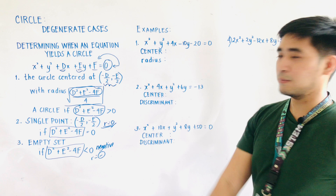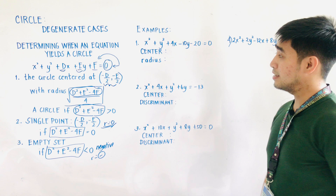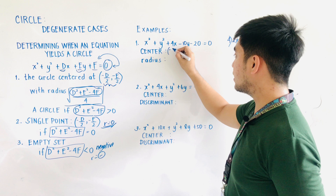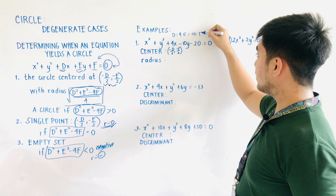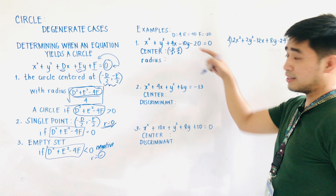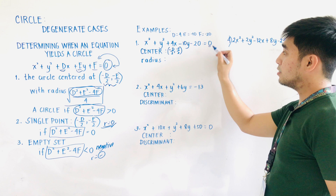Let us now solve examples. We have x squared plus y squared plus 4x minus 10y minus 20 equals zero. Let's first locate the center using negative D over 2 and negative E over 2. For this equation, D equals 4, E equals negative 10, and F equals negative 20, since the constant is already on the left side.